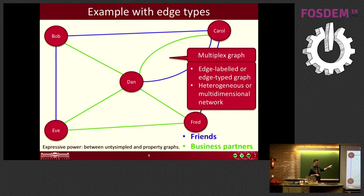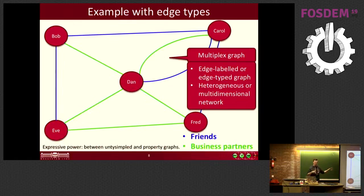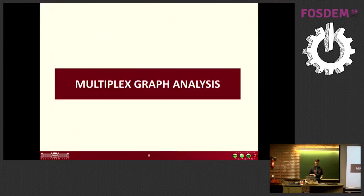Interestingly, the expressive power of this graph is a lot stronger than that of the untyped graph, but it's still miles away from the property graph served by graph databases, because we don't assign any properties to any of the nodes or edges.